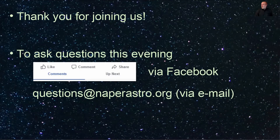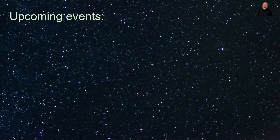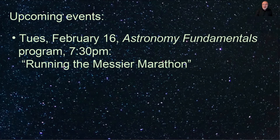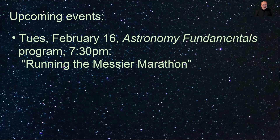We can take your questions and give them to the speaker. Before we get to our presentation, I just wanted to go over quickly upcoming events. This month's Fundamentals program, which is two weeks from tonight, is going to be on the Messier Marathon. For those of you who are somewhat more experienced amateur astronomers, you'll know the Messier list of celestial objects. For a couple of weeks in the early spring, you can actually, if you stay out all night, observe all 100 plus of them. So this presentation is going to be on how to do that — the Messier Marathon.